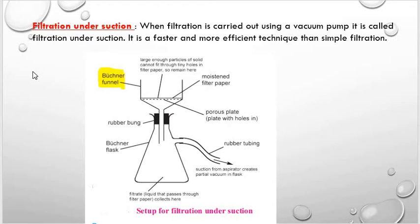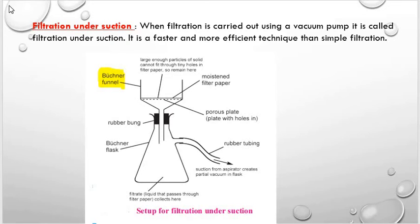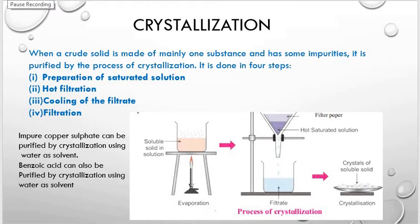A special porcelain funnel called the Buchner funnel is fitted on the conical flask with the help of a rubber cork, as seen in the diagram. The Buchner funnel has a porous circular bottom, and a circular filter paper of correct size is placed on this porous bottom. The funnel is moistened with a few drops of water or solvent, suction is created by starting the pump, filtration is carried out, crystals are collected on the filter paper, and the filtrate is collected in the flask.